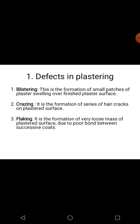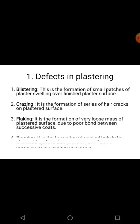The third type is flacking. Flacking is the formation of a loose mass of plaster on the surface — when there is poor bonding between two successive coats, the upper coat is removed in a very loose mass. The fourth type is popping, which is the formation of conical holes in the plaster surface due to particles that expand on setting, coming out of the surface.